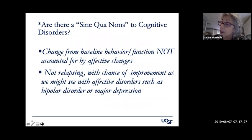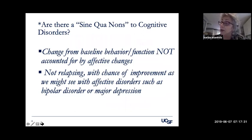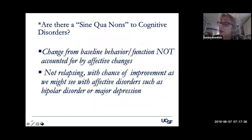In depression, people stop taking care of themselves and may not contribute to work or family in the same way, but this recovers with treatment or at least partially recovers. In dementia, the course may be slow at times, but there is never any recovery.